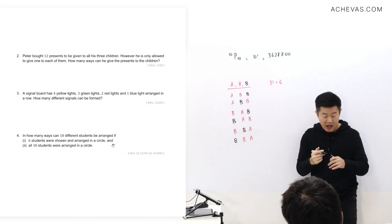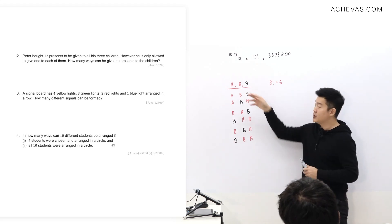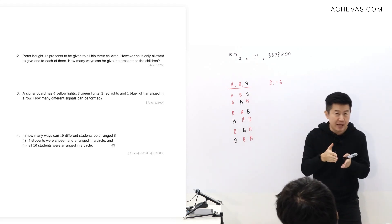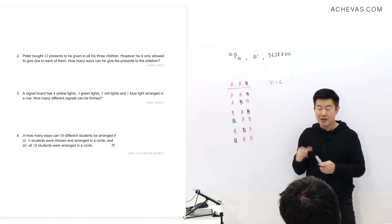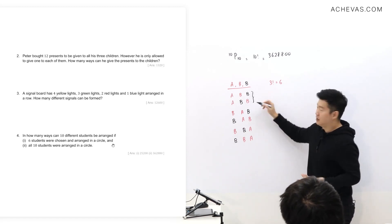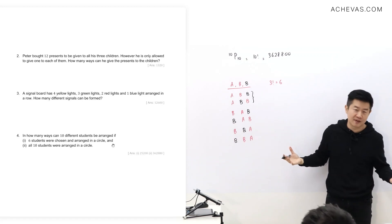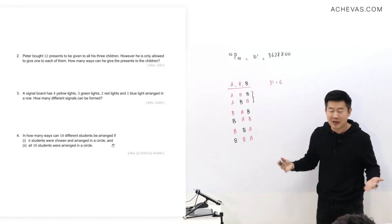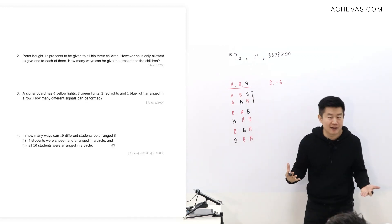Can you see on the board here, how many ways can I arrange A, B, B? There are only three ways that I can arrange ABB because these two are the same ways. They are exactly the same. I mean, if color doesn't matter, these two are exactly the same.